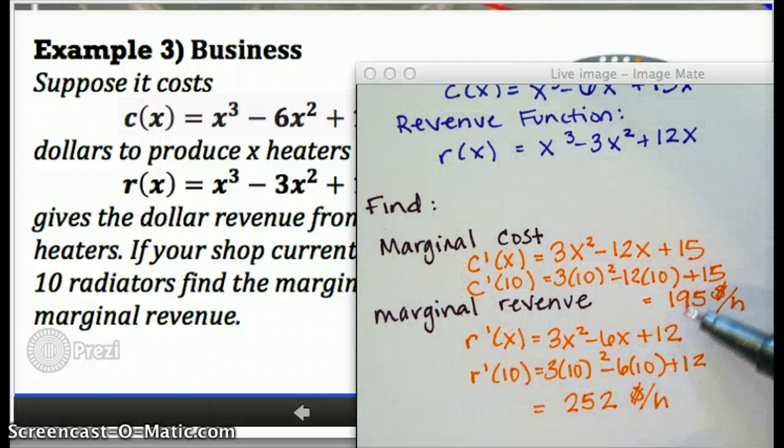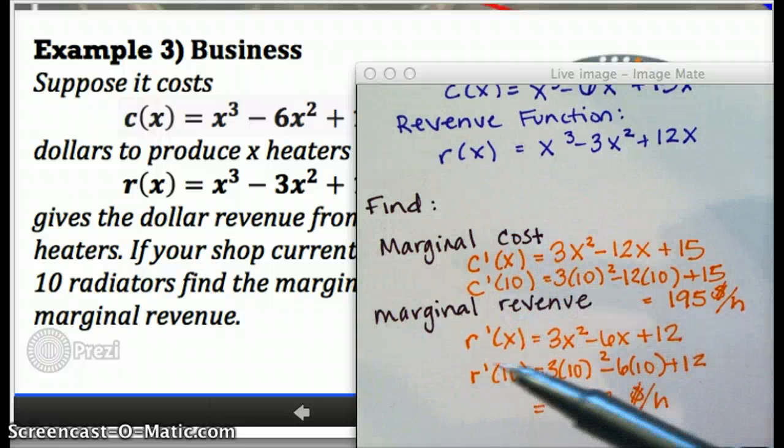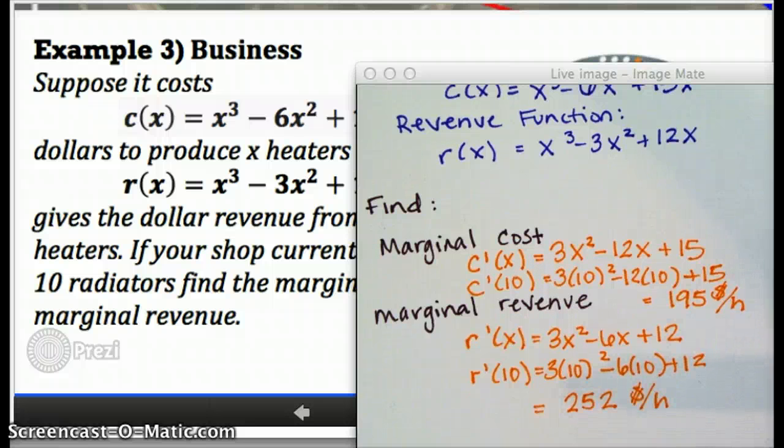Comparing these two, we have to spend 195, but we'd earn 252. It seems like that's probably a pretty good deal. We could compare that to the marginal cost and marginal revenue of the first radiator, though, and we might find that we're actually not making as much money on the 11th one. This is the kind of, frankly, very complicated, but really important calculations that economists and business people do all the time.